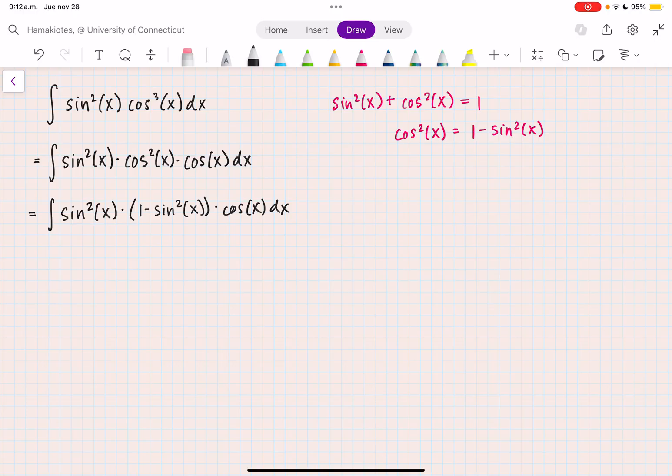Now I'm going to do a u substitution, where u is sine of x, and then du is going to be cosine of x dx. I can just see cosine of x dx, so now I can plug things in.